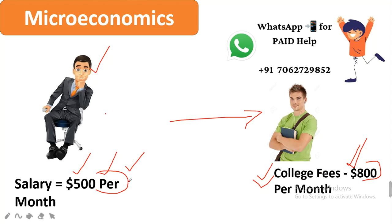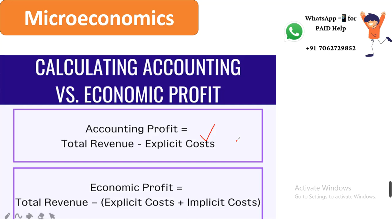If you were not a student you would earn $500 per month, but now you are paying $800 in fees and not earning any salary — that is a loss. So there are two things: you are paying fees, and you are not getting any salary. This is the implicit cost. The formula for accounting profit is: total revenue minus explicit cost. The formula for economic profit is: total revenue minus the sum of explicit cost plus implicit cost.